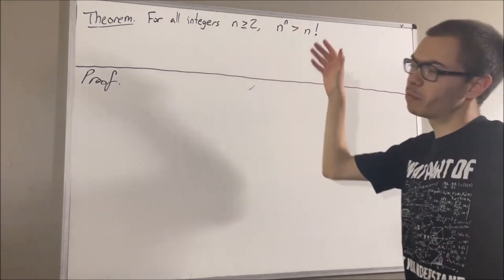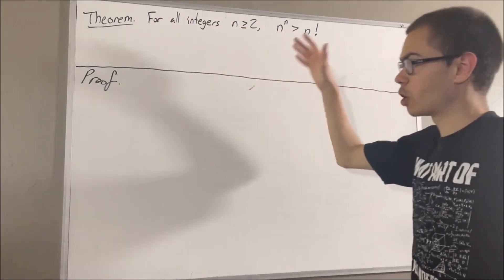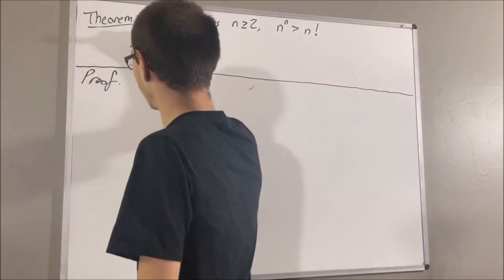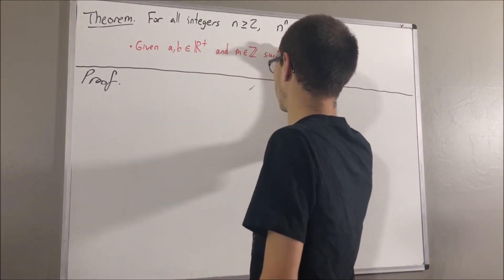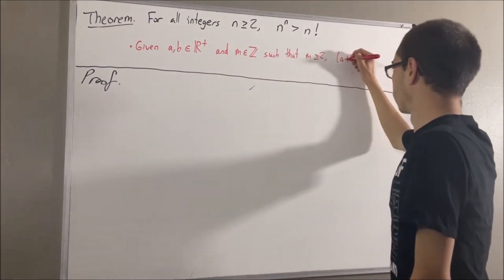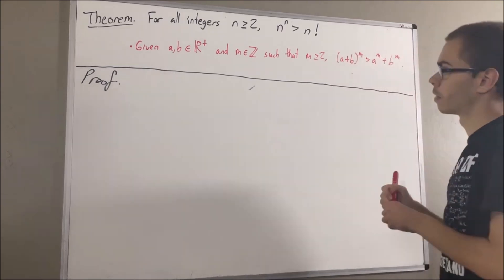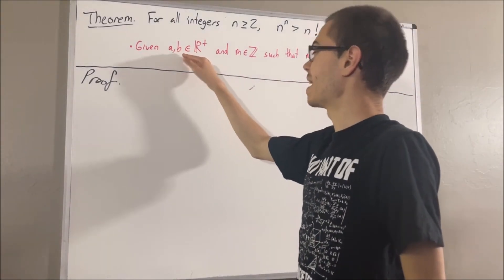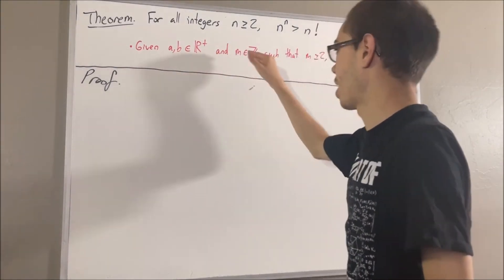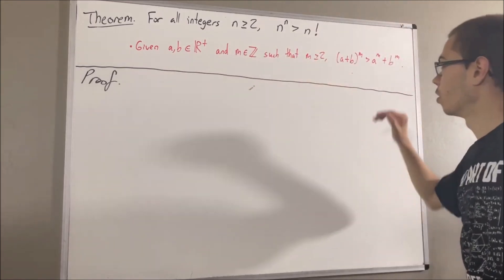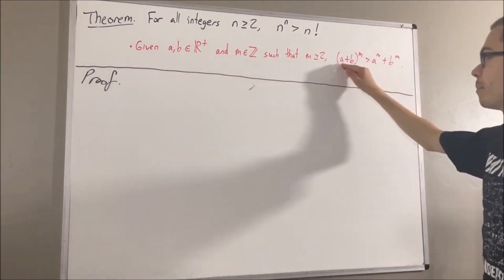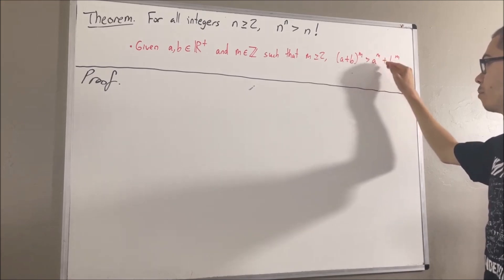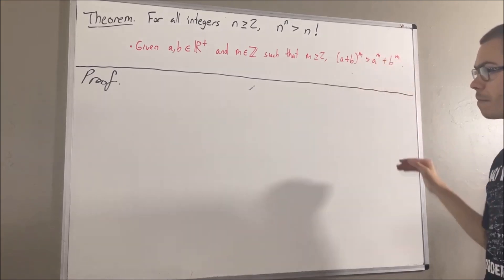In proving this theorem, we are going to use the following preliminary result: given any two positive real numbers a and b, and any integer m greater than or equal to 2, we have that a plus b to the power of m is greater than a to the power of m plus b to the power of m.